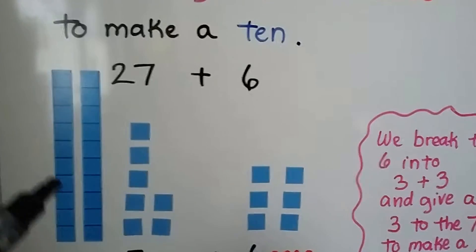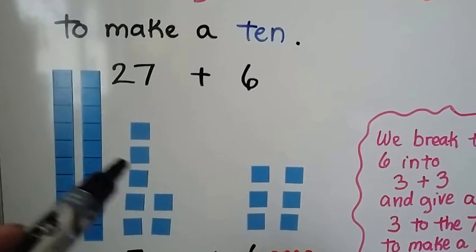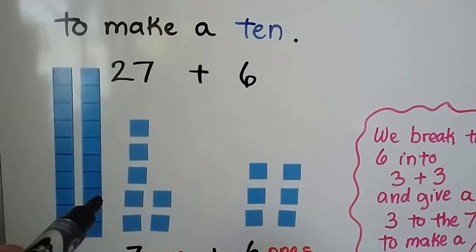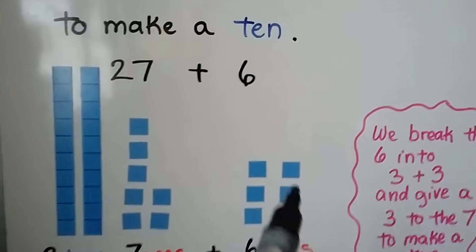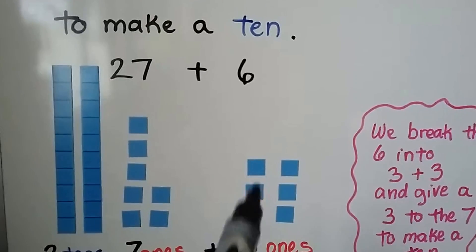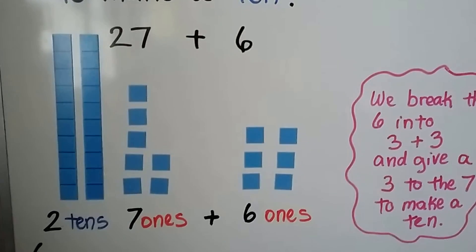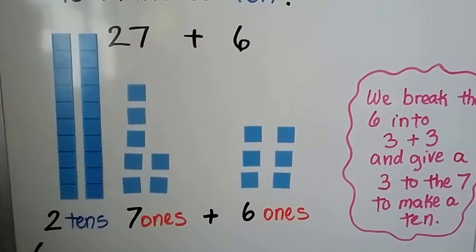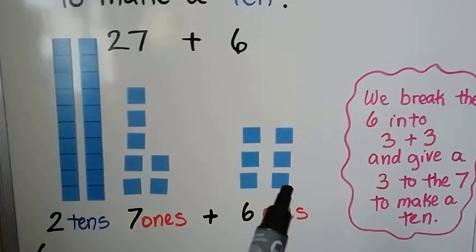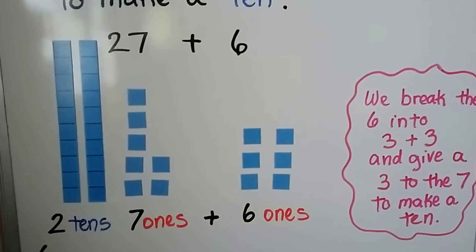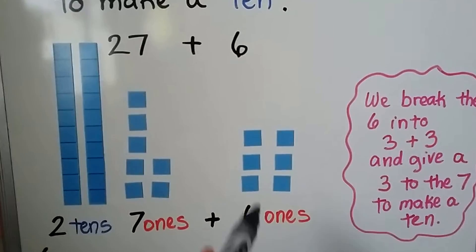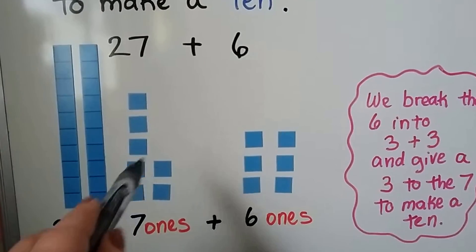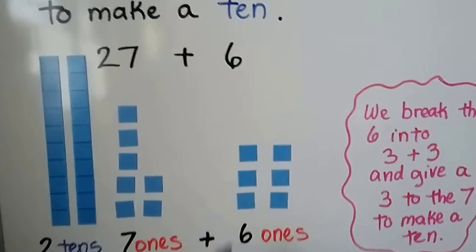Here we have two tens and seven ones as twenty-seven. That's one group. Then we have six ones — that's another group. We can break the six ones into a three plus three.